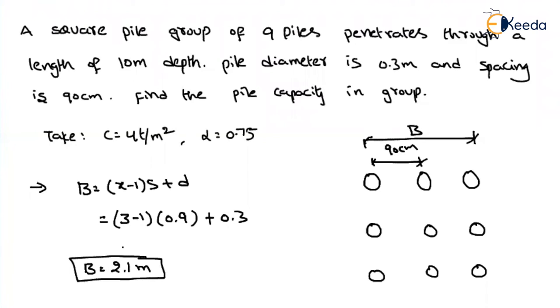So how can I find the pile group capacity? First, let us find out what is the individual pile capacity. That is Q_i, individual pile capacity.